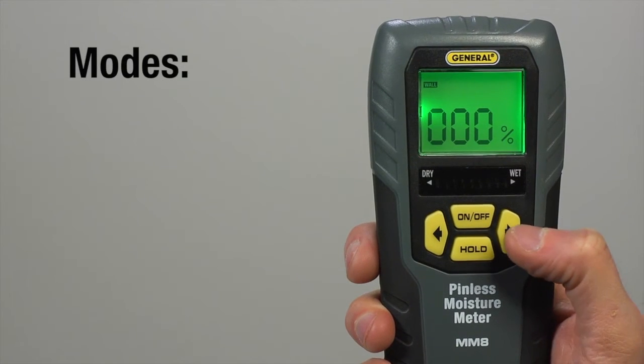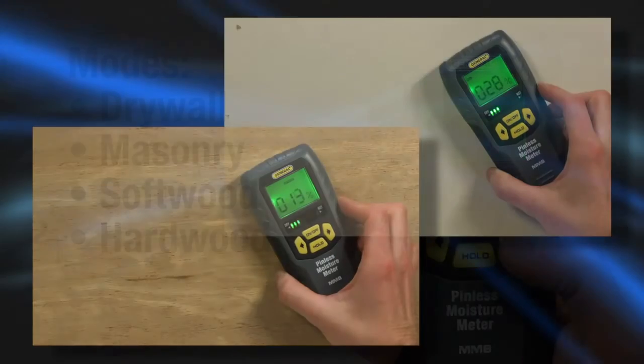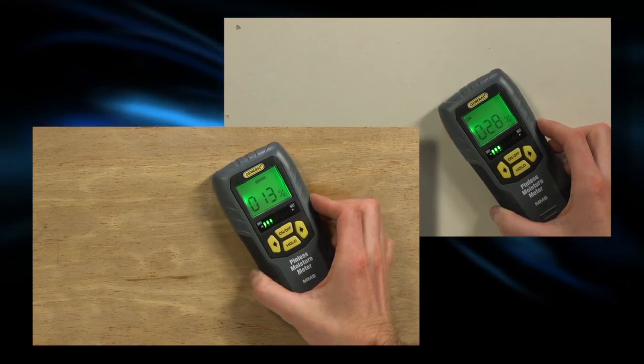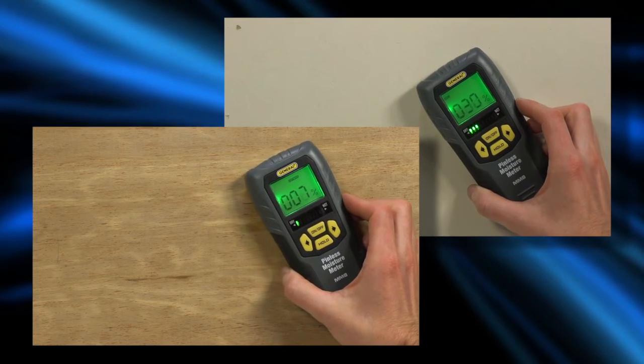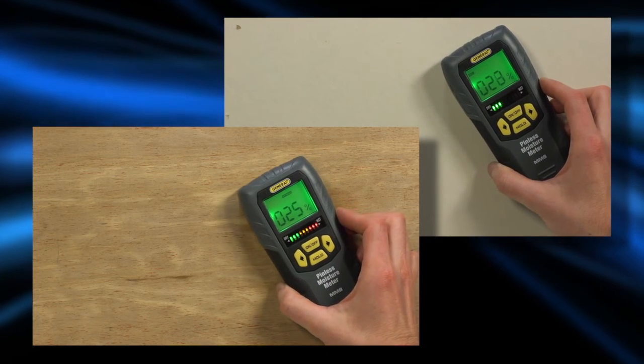Two arrow keys let you switch between modes: drywall, masonry, softwood and hardwood. Although the readings for drywall and wood are displayed as percentages of WME, these are just relative readings that let you compare moisture levels on materials or on different areas of the same material.